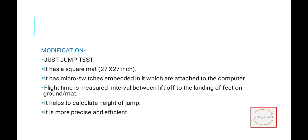A modification of the vertical jump test is the Just Jump Test. We take a square mat, usually 27 by 27 inches. The athlete stands on it and jumps on that mat. It has microswitches embedded with sensors connected to a computer. When you jump, it measures flight time—the interval between lift-off and landing. This measures time, whereas vertical jump measures distance. It helps calculate height of the jump and is more precise and efficient.